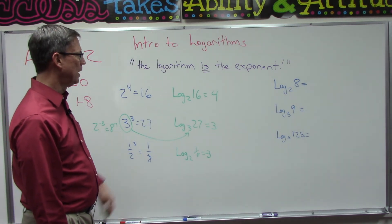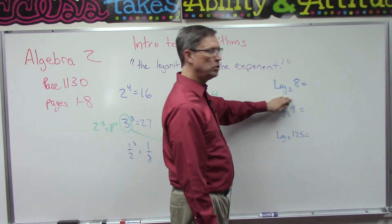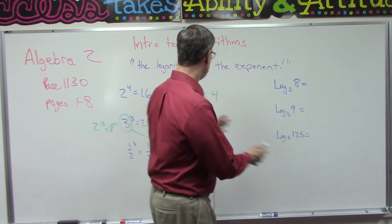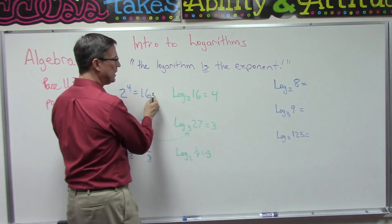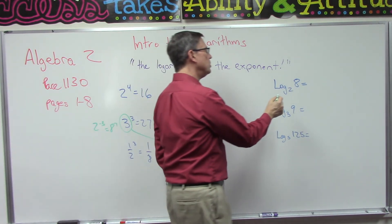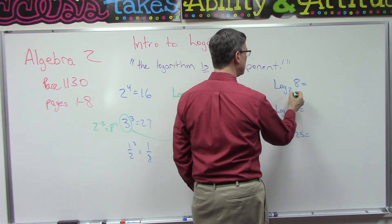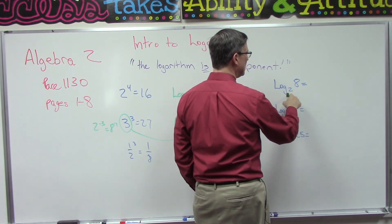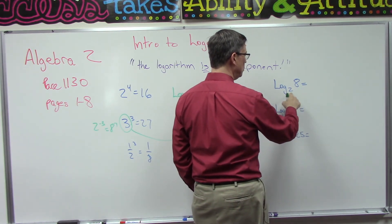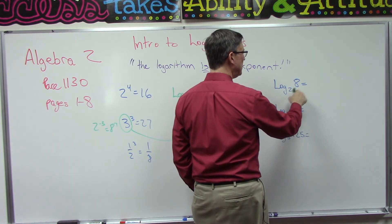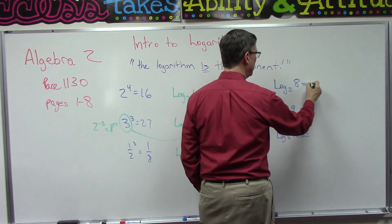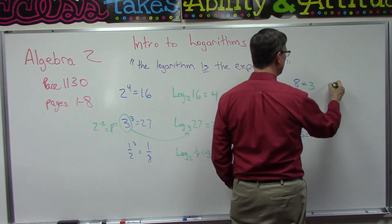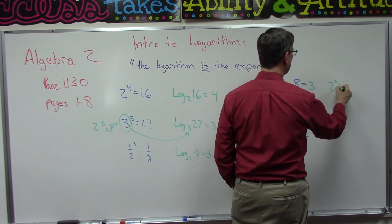Now, if they give it to you in log form and say 'write it in exponential form,' you're going the other way. For example: log base 2 of 8 — what exponent would I have to raise 2 to in order to get 8? The answer is 3, so in exponential form: 2 to the third power equals 8.